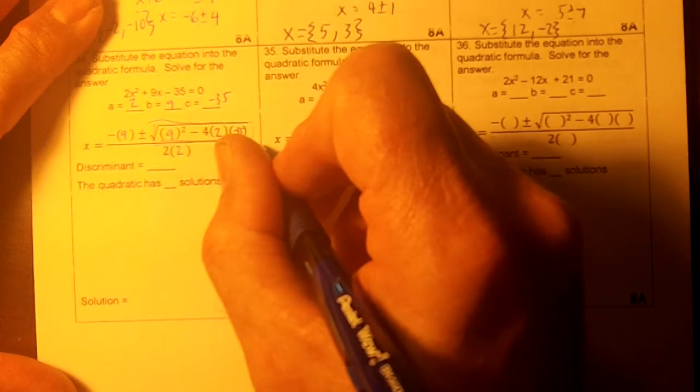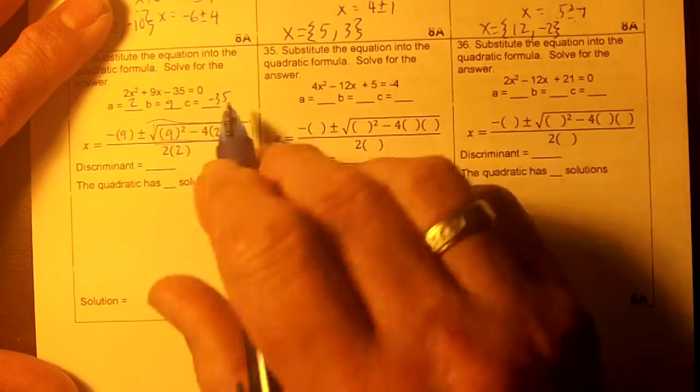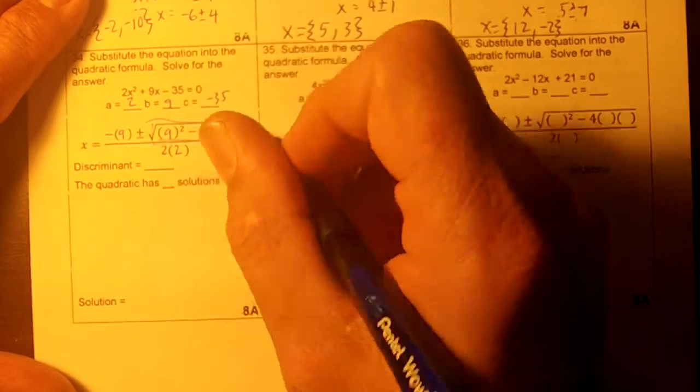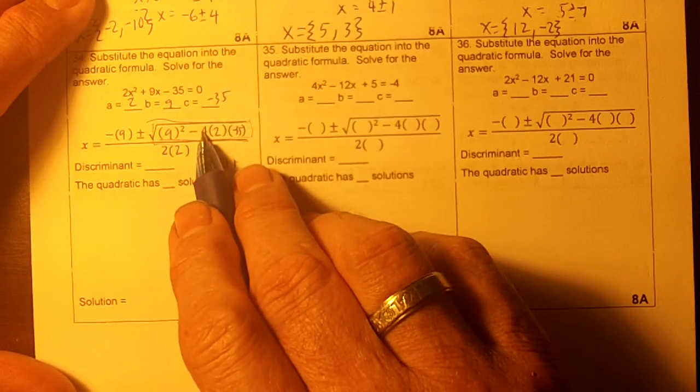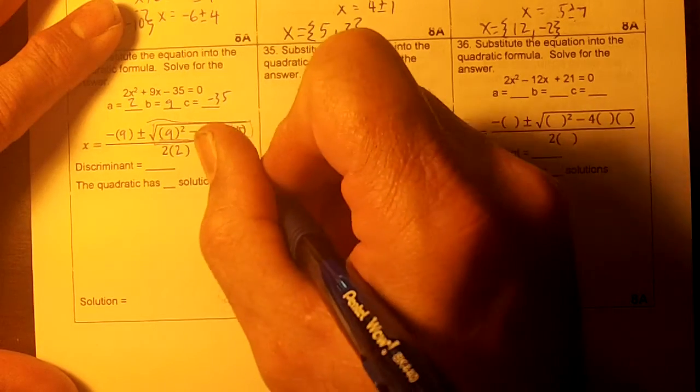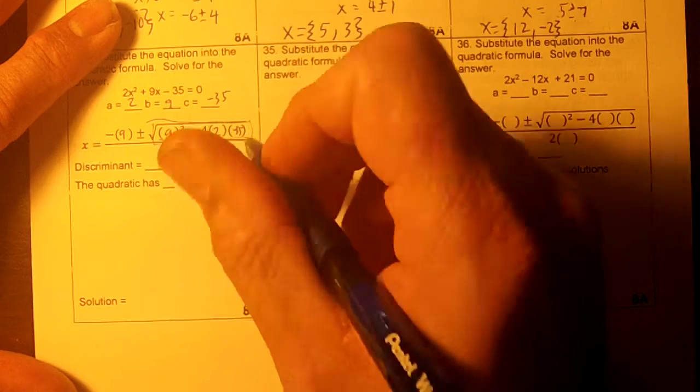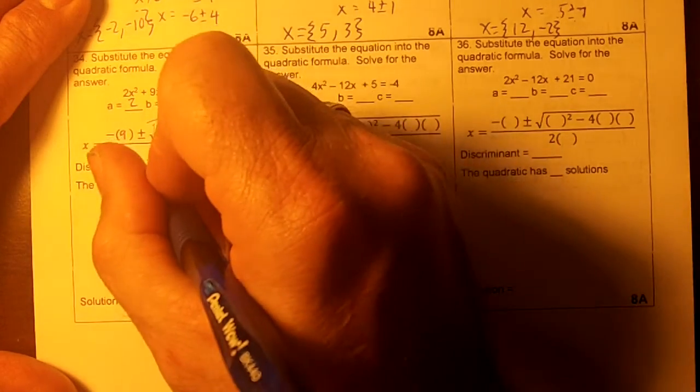Now then I'm just going to calculate this. Okay, so this is going to turn into 81. Two negatives make a positive. And then 2 times 35 is 70. 70 times 4 is 280. So this turns into 361, doesn't it? Okay, so the discriminant is 361.